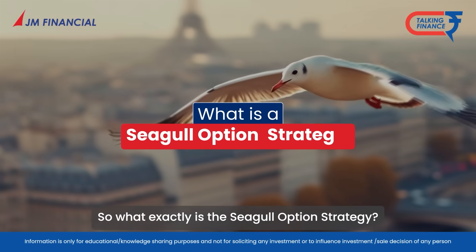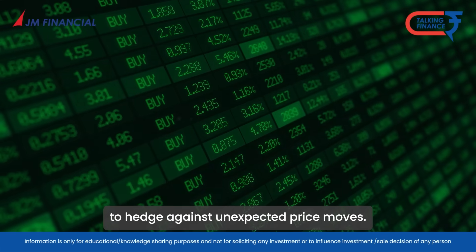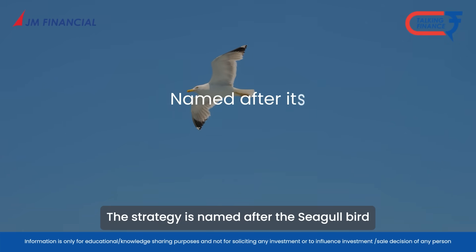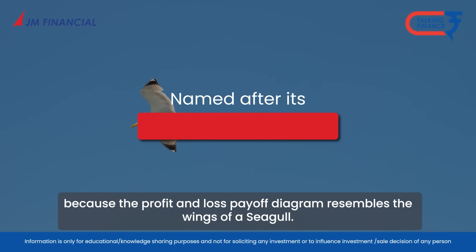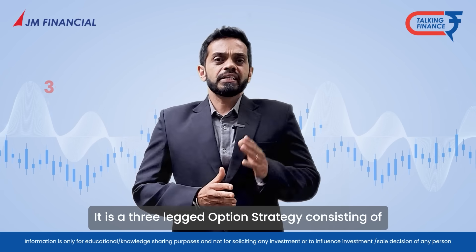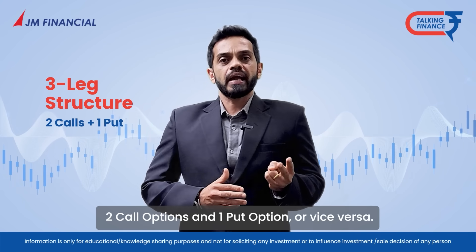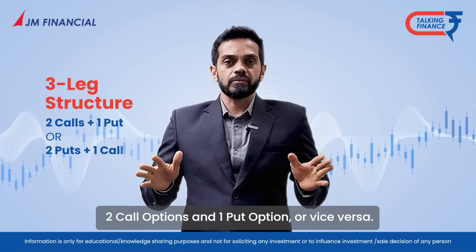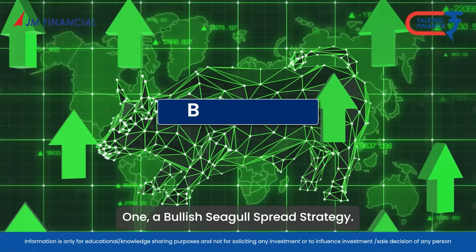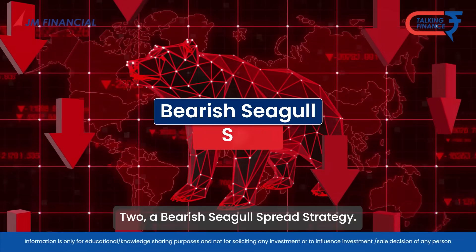What exactly is the Seagull option strategy? It is an advanced technique for experienced option traders to hedge against unexpected price moves. The strategy is named after the Seagull bird because the profit and loss payoff diagram resembles the wings of a Seagull. It is a three-legged option strategy consisting of two call options and one put option or vice versa. There are two types: a bullish Seagull spread strategy and a bearish Seagull spread strategy.